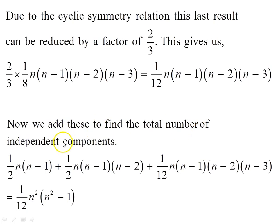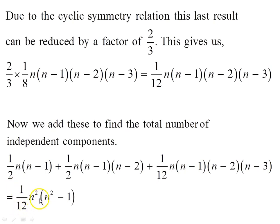We now add all three cases to find the total number of independent components. Adding one half n(n-1), one half n(n-1)(n-2), and one twelfth n(n-1)(n-2)(n-3) gives one twelfth times n squared times n squared minus 1. This is the total number of independent components for the Riemann tensor, where n is the dimension of the space.